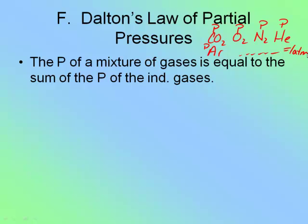The actual formula for Dalton's Law is P total — meaning the total air pressure — is equal to the pressure of gas A plus the pressure of gas B plus the pressure of gas C, plus however many different gases you have. You just add up all the pressures. Very simple.